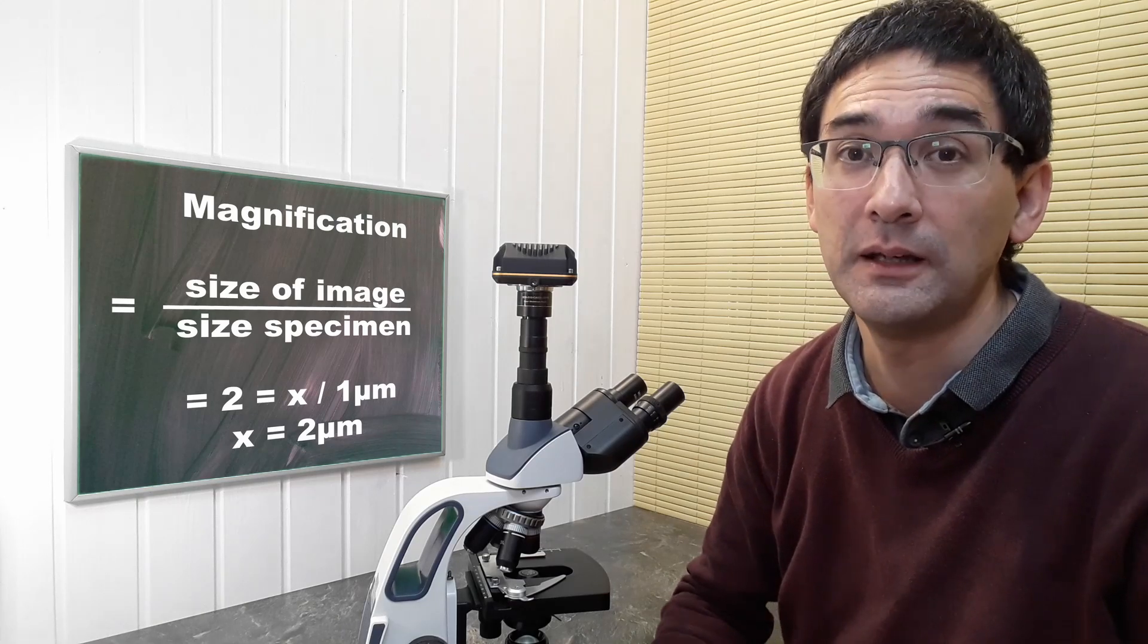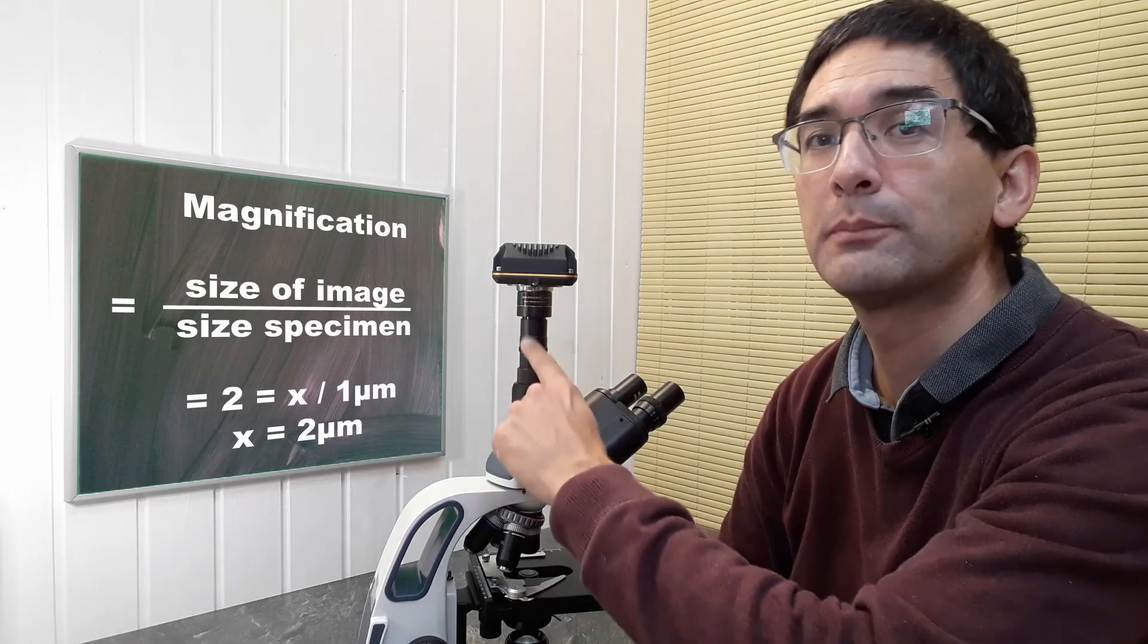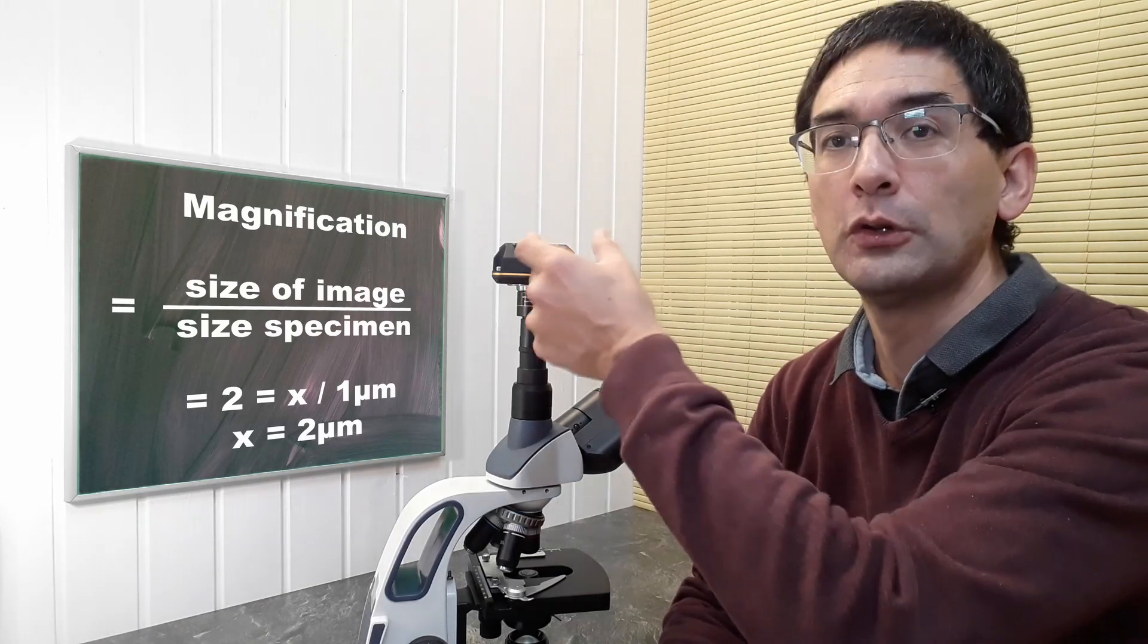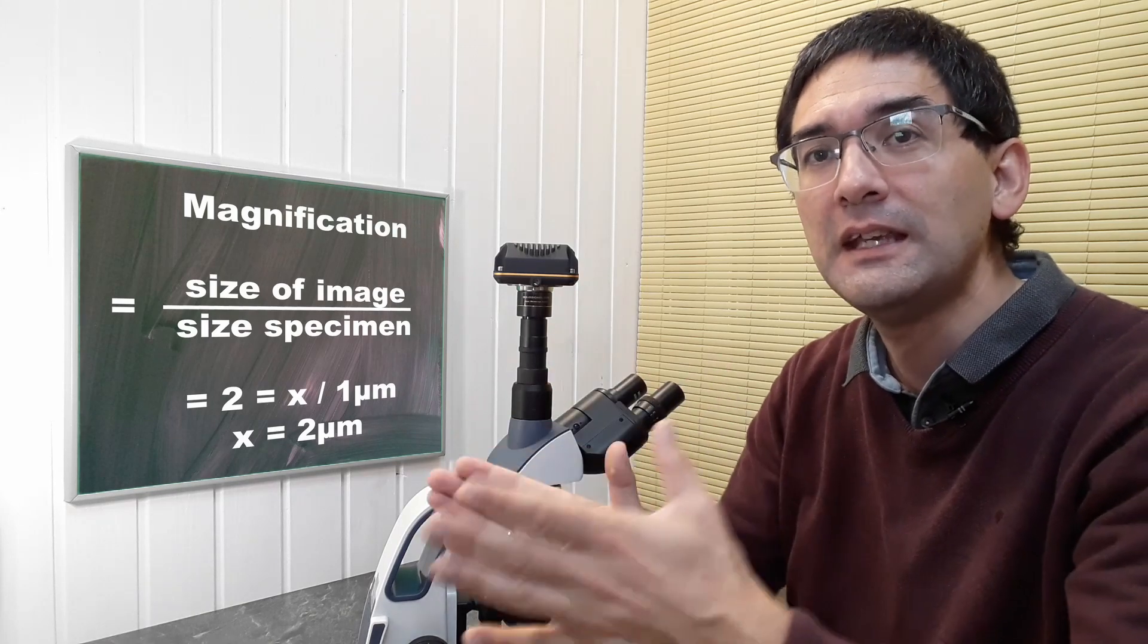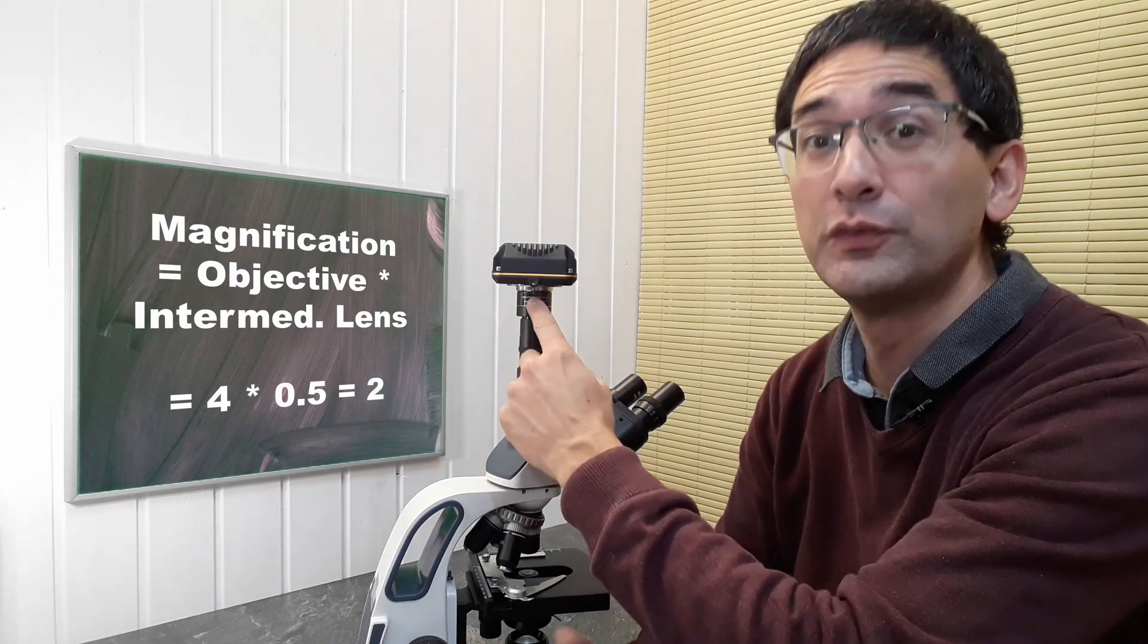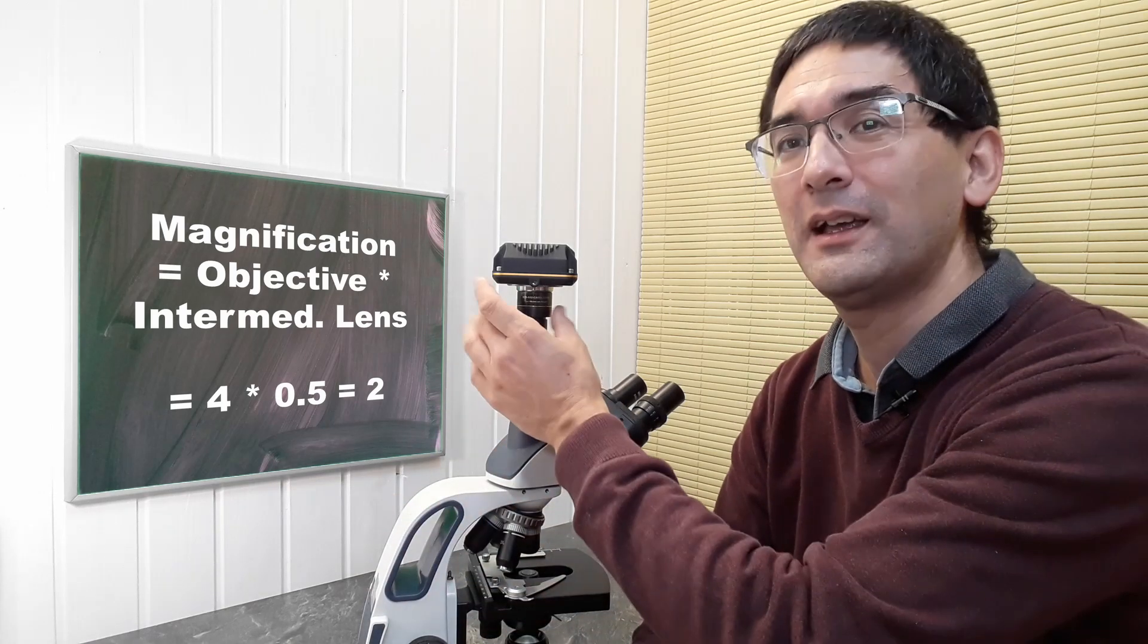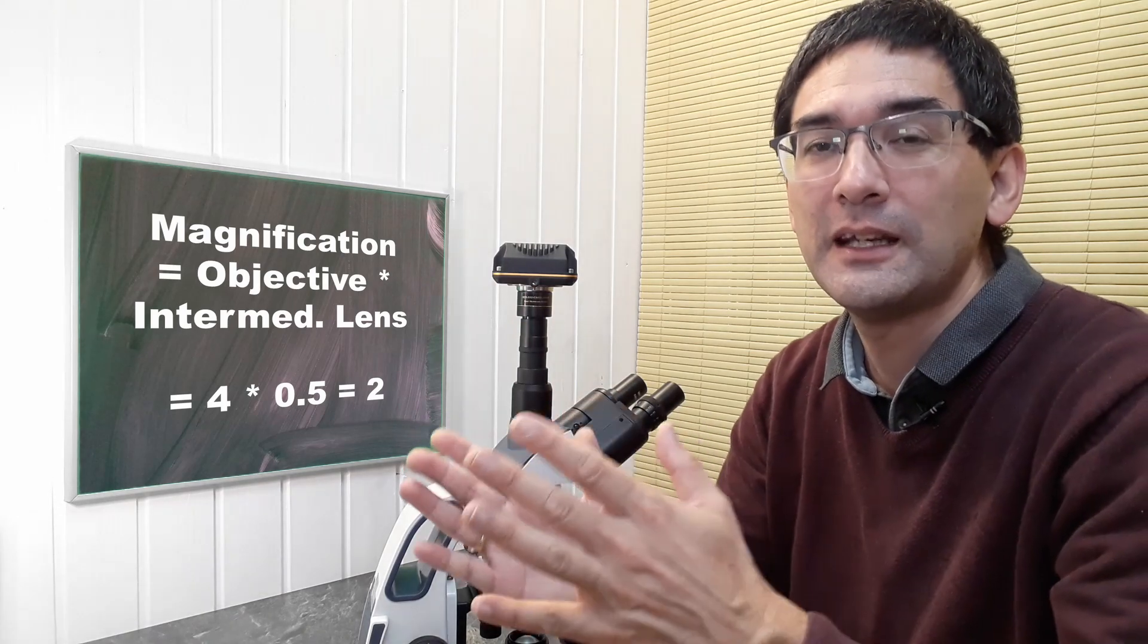If you have a DSLR camera connected, sometimes the projection eyepiece or intermediate optics has a value larger than one because the sensor is larger. For microscope cameras, usually the magnification is reduction optics because it makes the magnification smaller so you're able to fit more images on the sensor to get a better field of view.